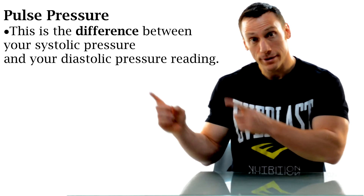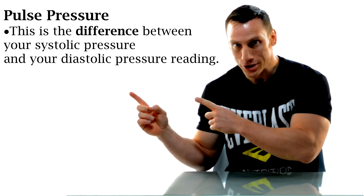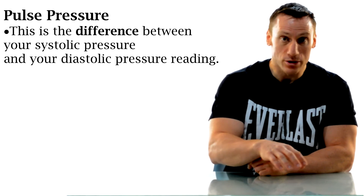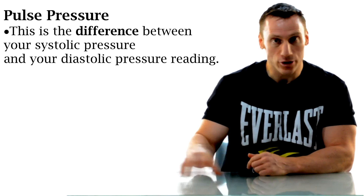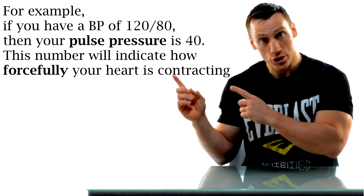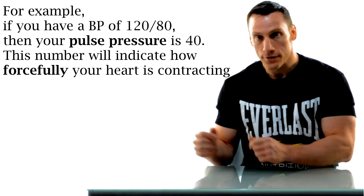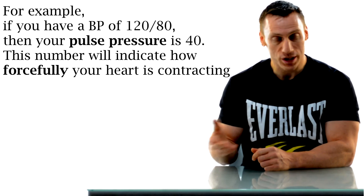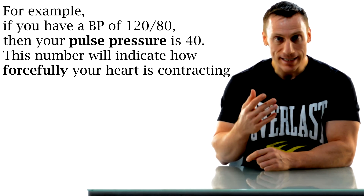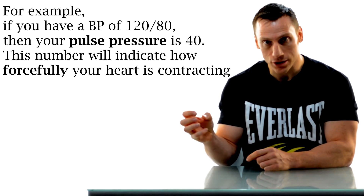Finally, let's quickly look at your pulse pressure, which is the difference between your systolic and your diastolic pressure. For example, if you have a blood pressure of 120 over 80, then your pulse pressure is going to be 40. This is indicative of how forcefully your heart is contracting.